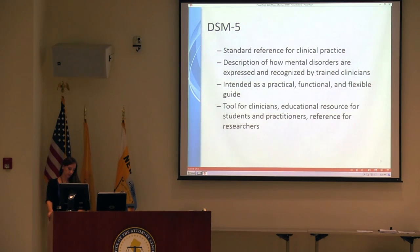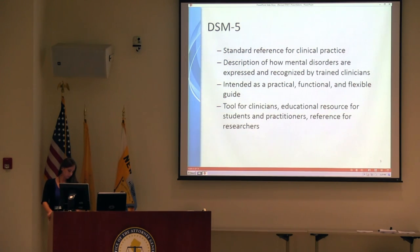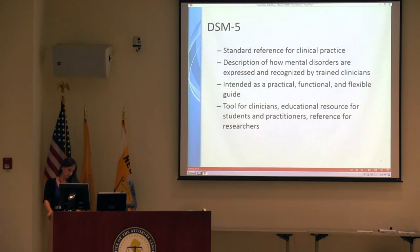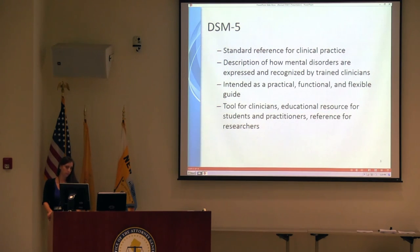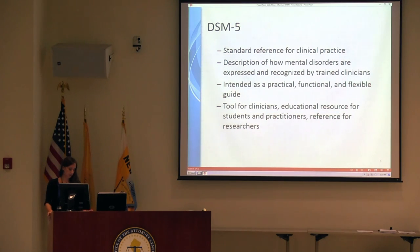In 1987, we had the revision to the DSM-3, which had 297 diagnoses. In 1994, the DSM-4 came out. And in 2000, the DSM-4-TR with 365 diagnoses. And finally, now we have the DSM-5.